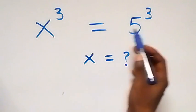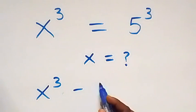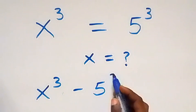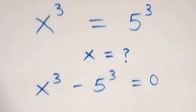Let's take 5 raised to power 3 to this side, then this becomes x raised to power 3 minus 5 raised to power 3 equals 0.